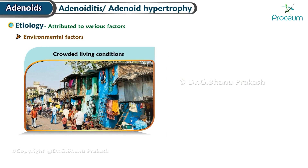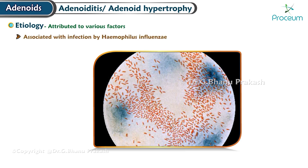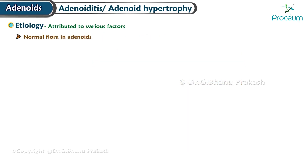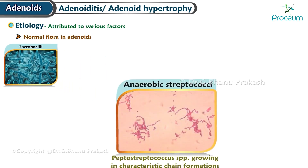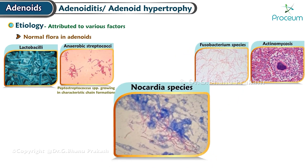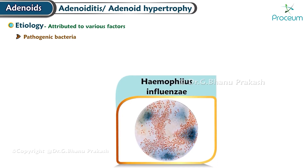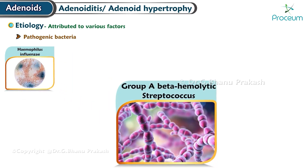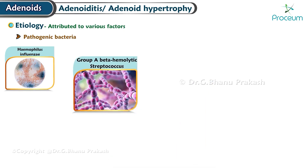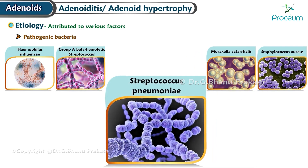Allergic conditions affecting the upper respiratory tract can also contribute to adenoid enlargement. Environmental factors such as crowded living conditions and environmental pollution may play a role. Hyperplasia of adenoids has been associated with infection by Haemophilus influenzae, among other organisms. Normal flora of the adenoids includes lactobacilli, anaerobic streptococci, actinomycosis, Fusobacterium species, and Nocardia species. Pathogenic bacteria commonly found in adenoiditis include Haemophilus influenzae, Group A beta-hemolytic Streptococcus, Staphylococcus aureus, Moraxella catarrhalis, and Streptococcus pneumoniae.